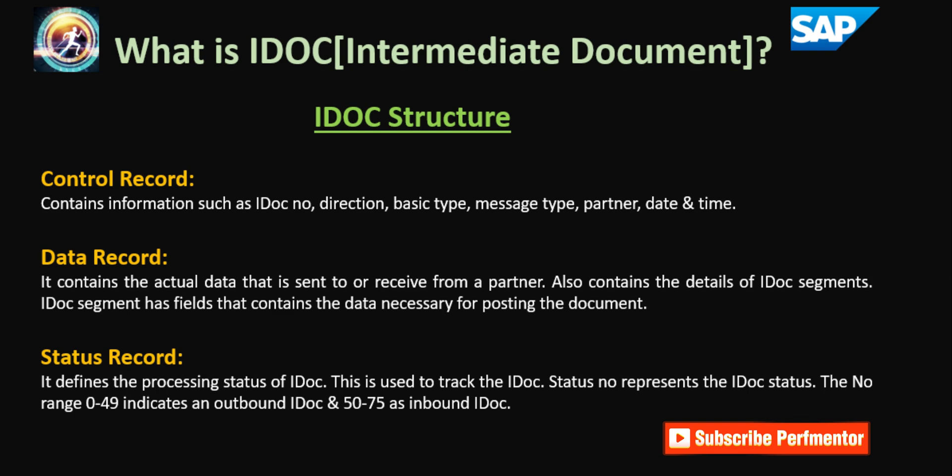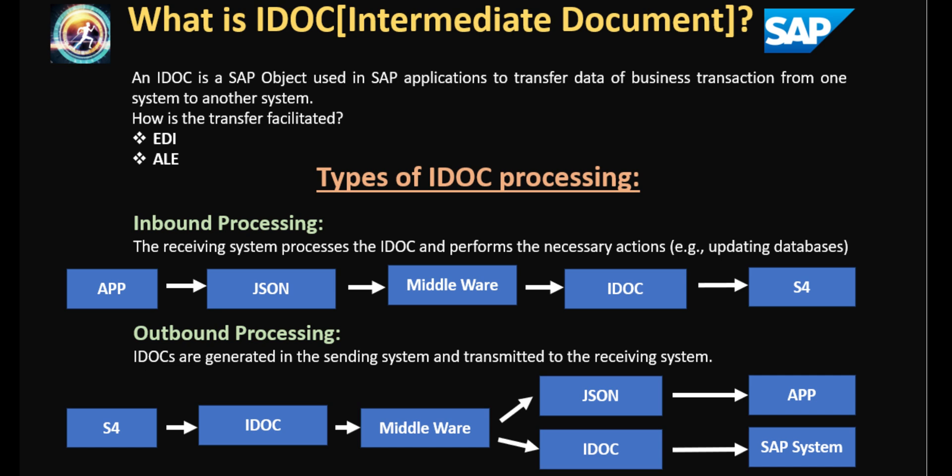The status record is usually very helpful because when an IDOC fails, the support team can go and check what was the reason it failed and try to reprocess it. These are the entities present inside the IDOC. IDOC is used for transferring the data of a business transaction from one system to another system.